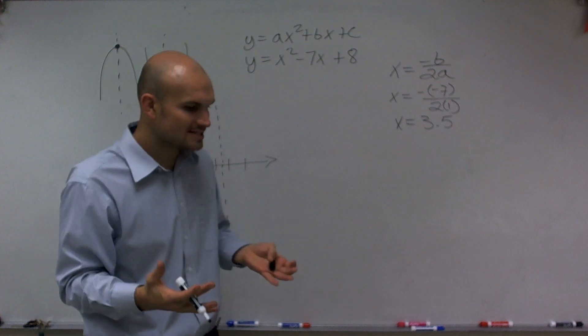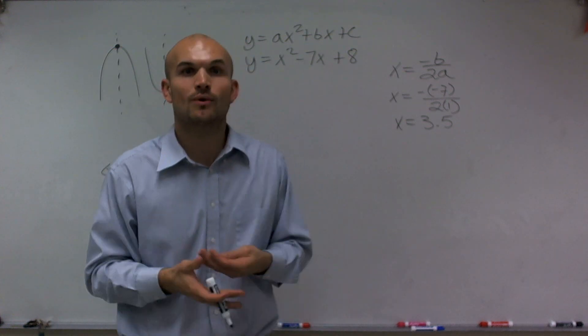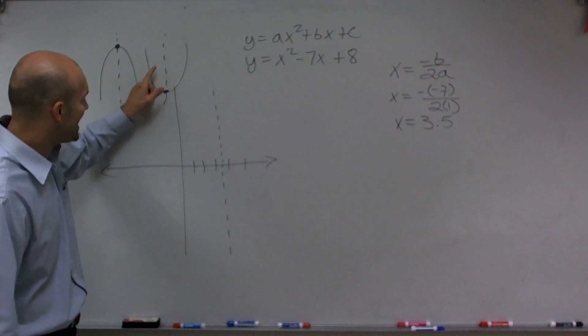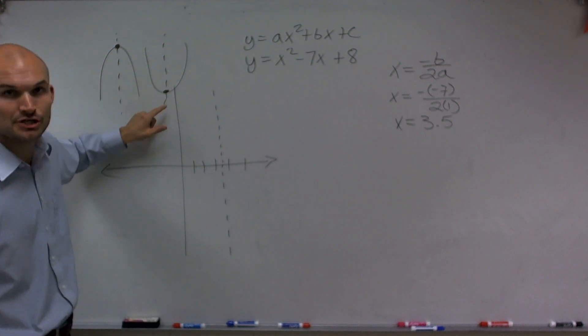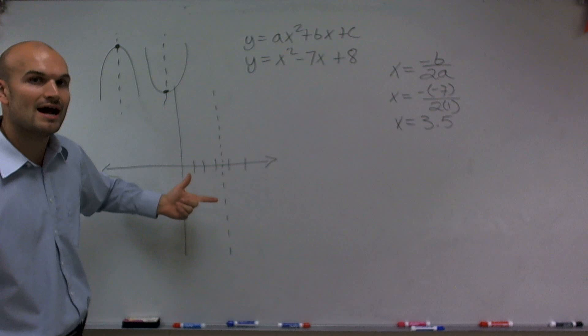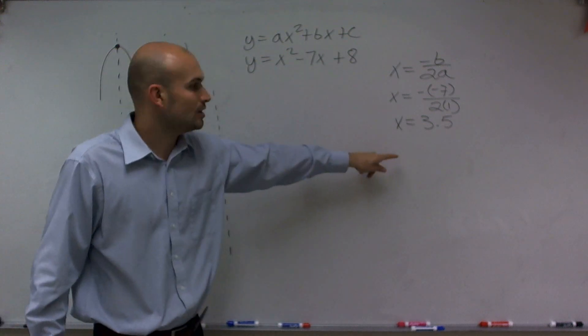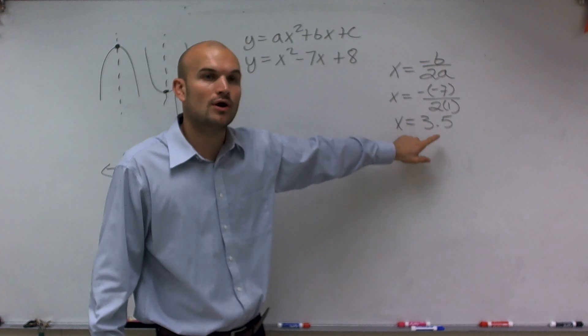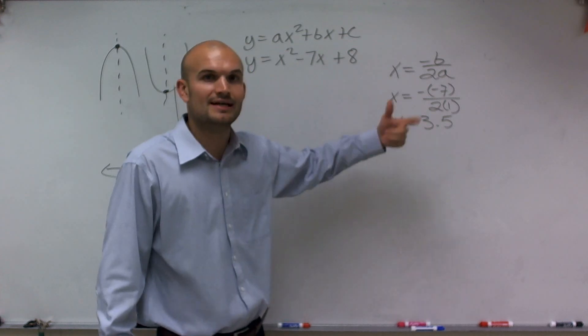So therefore, the next thing you want to do is once you determine the line of symmetry, you want to determine the vertex. So to do that, remember the x value of your vertex is your line of symmetry. So to find the y value, what you're going to have to do is plug in, just like you did table of values, but plug in your x value of your line of symmetry into your function.